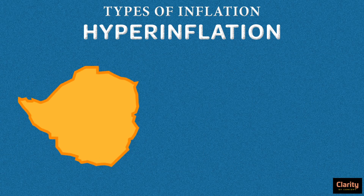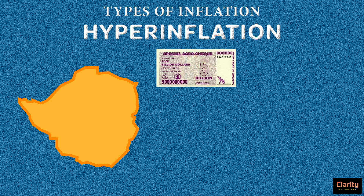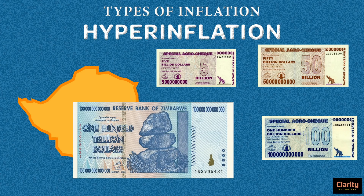Recently, hyperinflation occurred in Zimbabwe. In 2008, prices were doubling every 24 hours. Zimbabwe's central bank responded by issuing currencies with larger denominations — such as $5 billion, $50 billion, $100 billion, and finally in January 2009, a note of $100 trillion was issued. Prices of goods were several billion times more than the previous year. This is very bad for an economy. People resort to the barter system or start using foreign currencies, and the domestic currency loses both its value and significance.